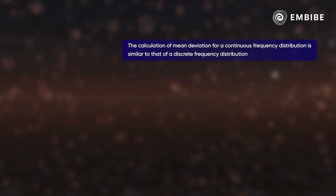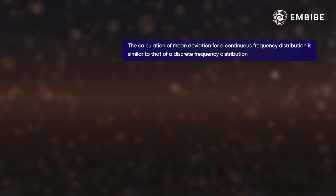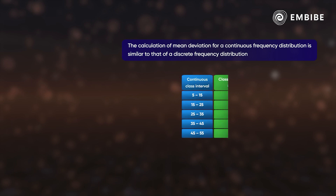Once you have a continuous frequency distribution, the steps involved in calculating the mean deviation are similar to those for a discrete frequency distribution. The only difference is that the midpoints of class intervals — called class marks — are used instead of discrete observations. That is, the class marks are considered as the observations x₁, x₂, up to xₙ with frequencies f₁, f₂, up to fₙ respectively.